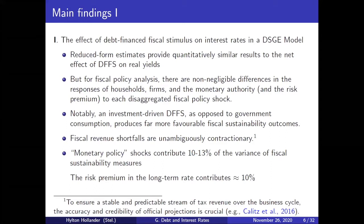We find very qualitatively similar results, but for fiscal policy analysis there are very clear non-negligible differences in the responses of households, firms, the monetary authority, and the risk premium to each of the aggregated fiscal policy shocks. If we just want to estimate the effect of debt on real yields, some reduced form ad hoc specifications seem to produce qualitatively similar results. But if we want to do policy analysis, we need to dig deeper and look at the disaggregated instruments of fiscal policy, especially on the expenditure side.